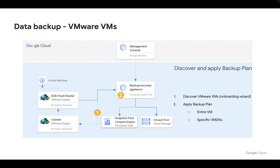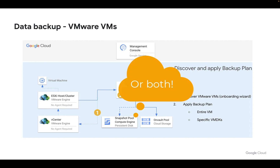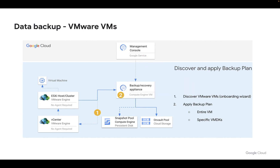We then configure our backup and recovery appliance with either a sufficiently sized snapshot pool or an OnVault pool to hold the backups of the VMs. We then attach to the GCVE environment by talking to the vCenter and the ESXi host to discover the VMs.